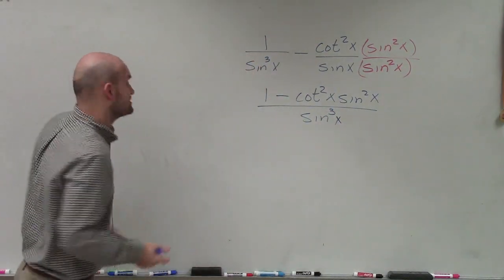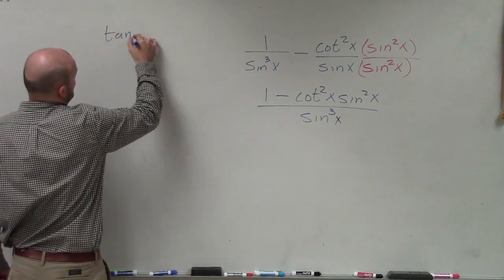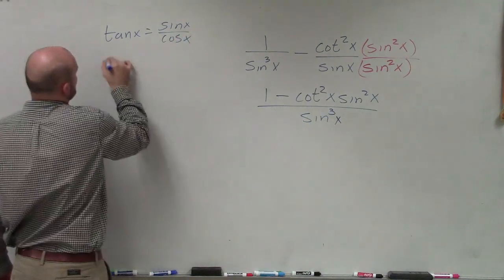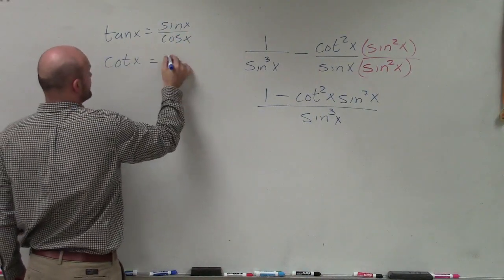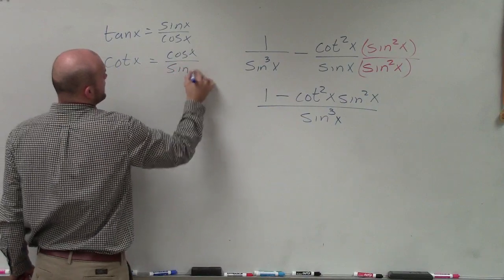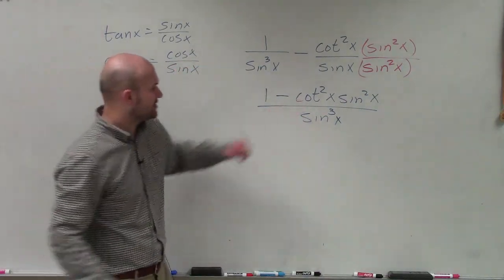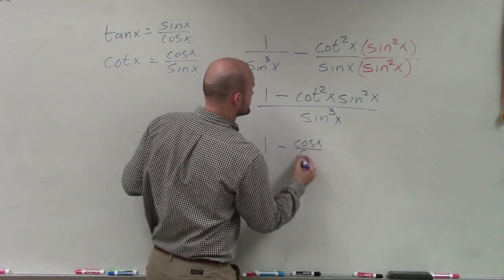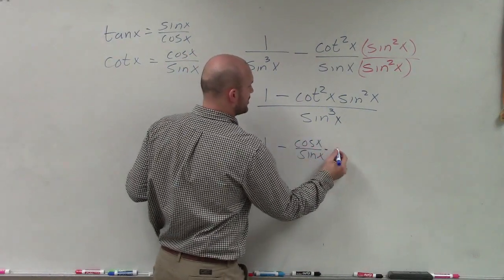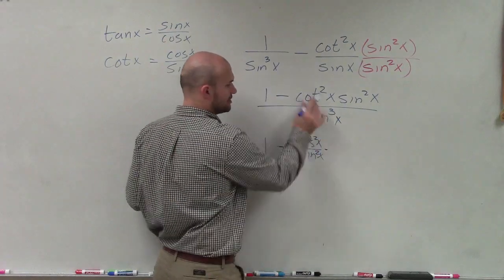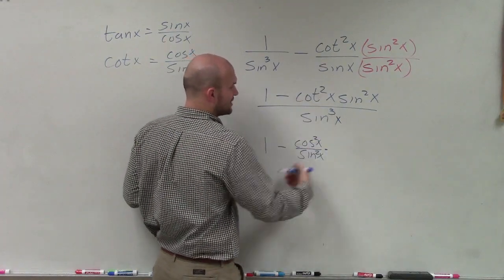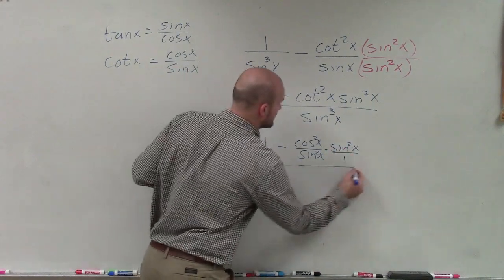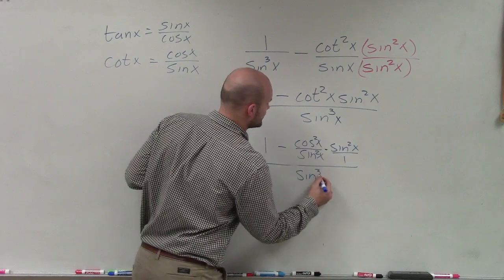Now remember the cotangent by using my reciprocal identities. Remember tangent of x equals sine of x over cosine of x. The cotangent of x equals cosine of x over sine of x. So therefore, I can rewrite this as 1 minus cosine of x over sine of x. And when I multiply, that's squared, cotangent squared, so it's cosine squared over sine squared, times sine squared of x. We can rewrite that as a fraction as over 1 divided by sine cubed of x.